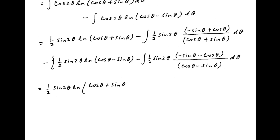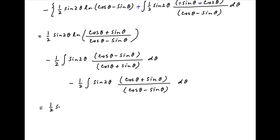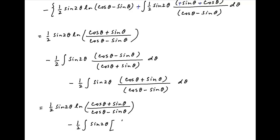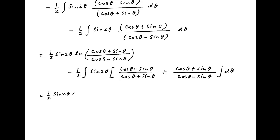Combining the first and third terms, we get half of sin 2θ times ln[(cos θ + sin θ)/(cos θ − sin θ)], minus half of the integral of sin 2θ times (cos θ − sin θ)/(cos θ + sin θ) dθ, minus half of the integral of sin 2θ times (cos θ + sin θ)/(cos θ − sin θ) dθ. Combining the two integral terms gives minus half of the integral of sin 2θ times [(cos θ − sin θ)/(cos θ + sin θ) + (cos θ + sin θ)/(cos θ − sin θ)] dθ.